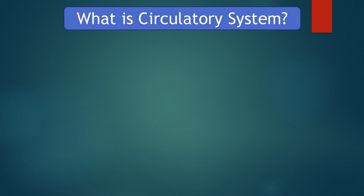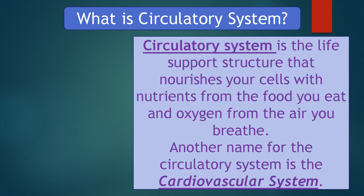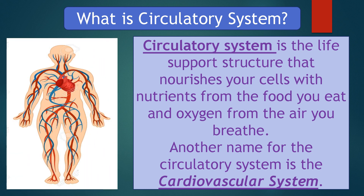What is the circulatory system? The circulatory system is the life support structure that nourishes your cells with nutrients from the food you eat and oxygen from the air you breathe. It can be compared to a complex arrangement of highways, avenues, and lanes connecting all the cells together into a neighborhood. Sequentially, the community of cells sustains the body to stay alive.